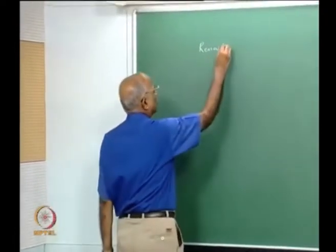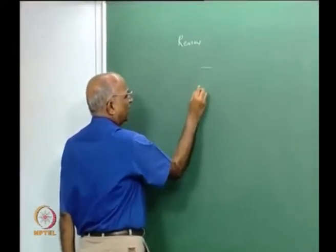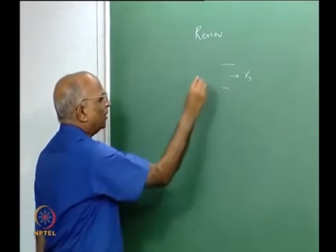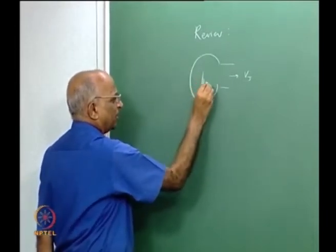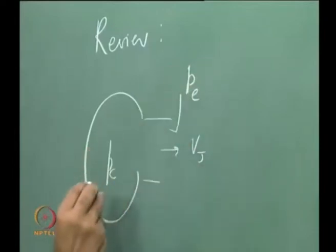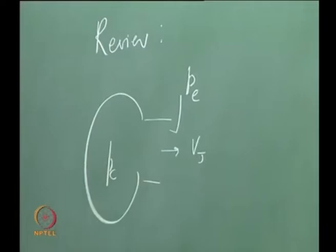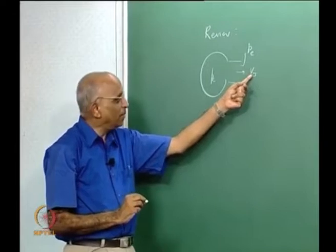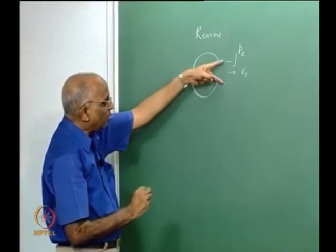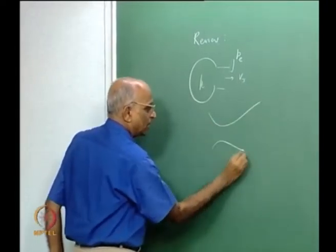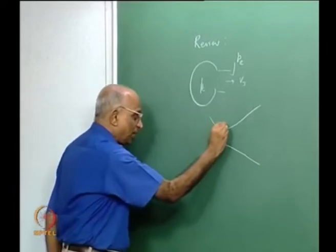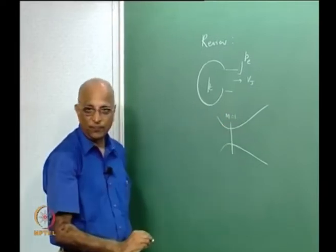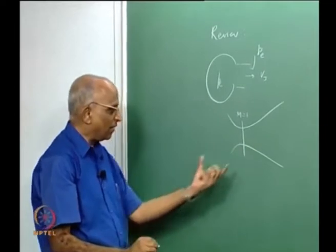What did we do about nozzles? We told ourselves it is something like a vent and we first learned how to calculate the jet velocity. We said I have a chamber at pressure Pc; at the exit I have pressure Pe, and I can calculate the jet velocity. To get a high value of Vj, I need the opening to be in the form of a convergent-divergent shape, with the minimum area — the throat — having Mach number equal to 1. We called this the de Laval nozzle or convergent-divergent nozzle, where the convergent part has Mach number less than 1 and the divergent part has Mach number greater than 1.